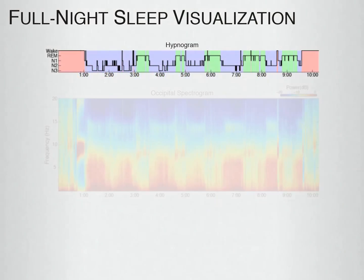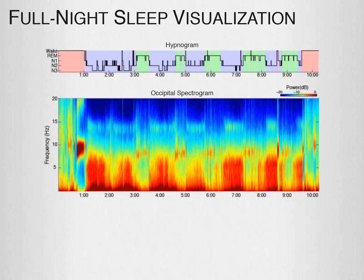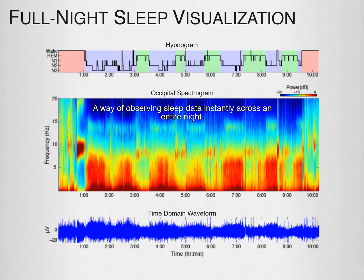Here is the hypnogram and multi-taper spectrogram for an entire night of sleep data. Without knowing much about what the spectrogram means, you can already observe repeating motifs throughout the night that correspond with wake, REM, and non-REM sleep. What is really important about this is that it is a way of observing sleep data instantly across an entire night. If you were to just look at the time domain waveform traces, other than changes in amplitude, there is almost nothing you can observe at this time scale.